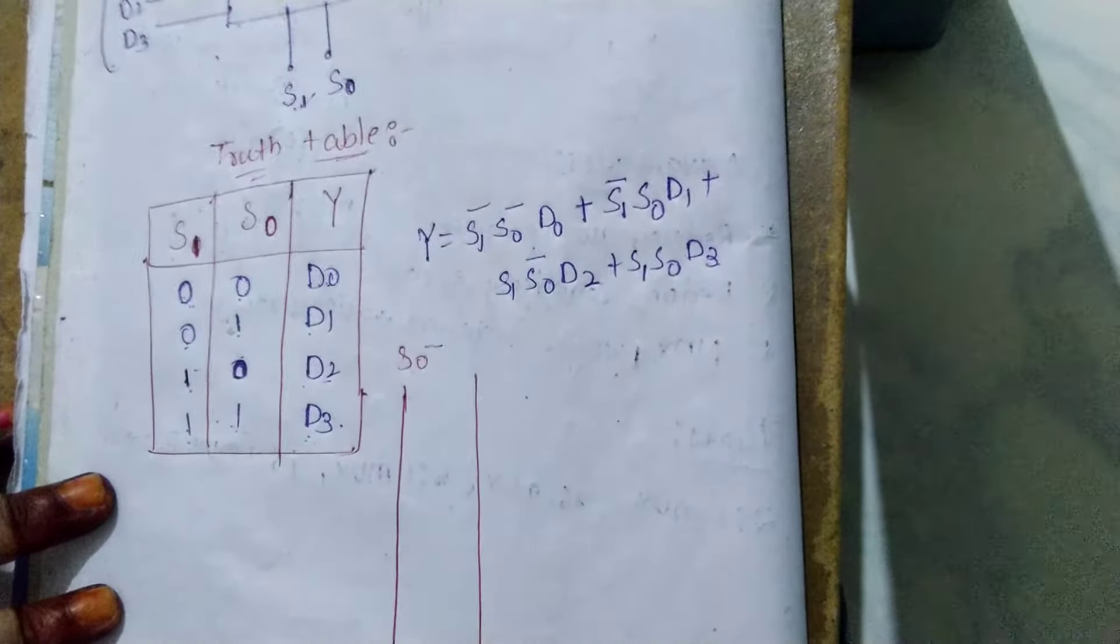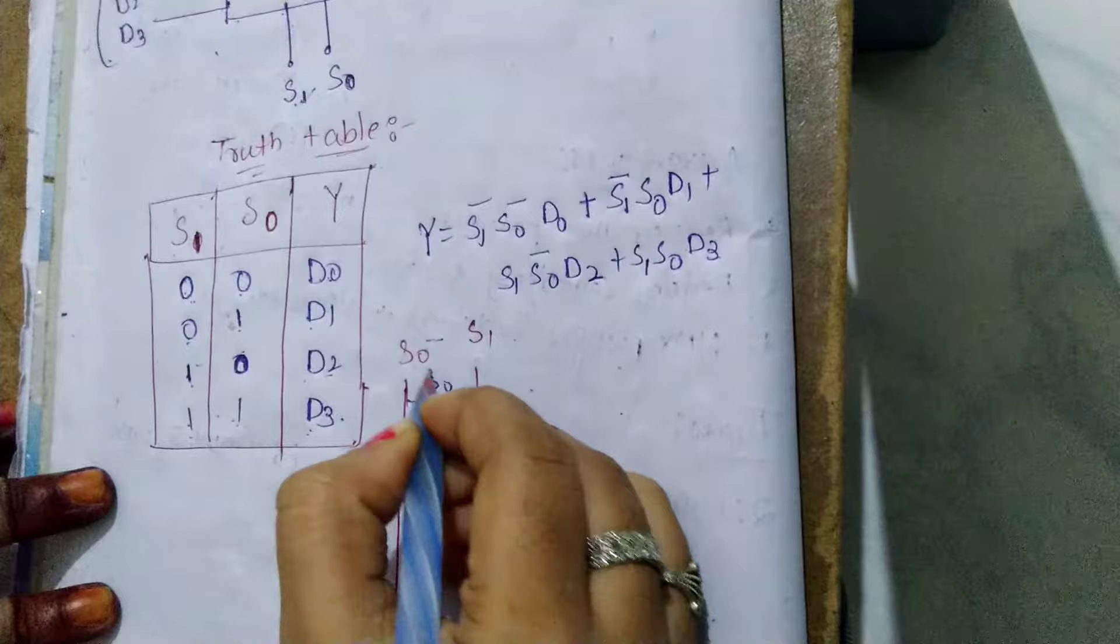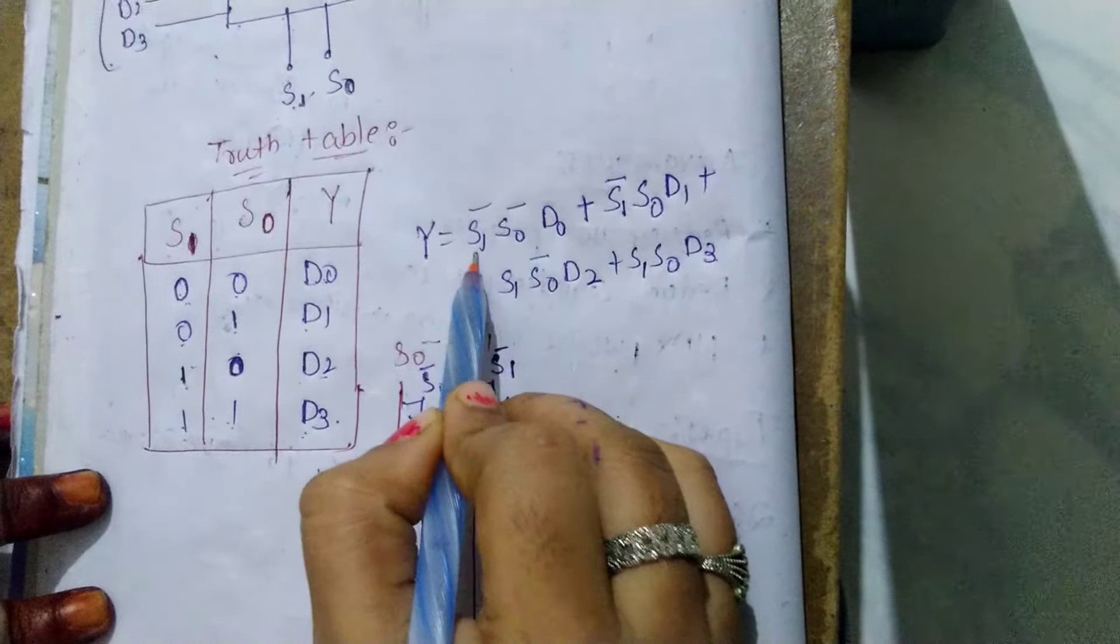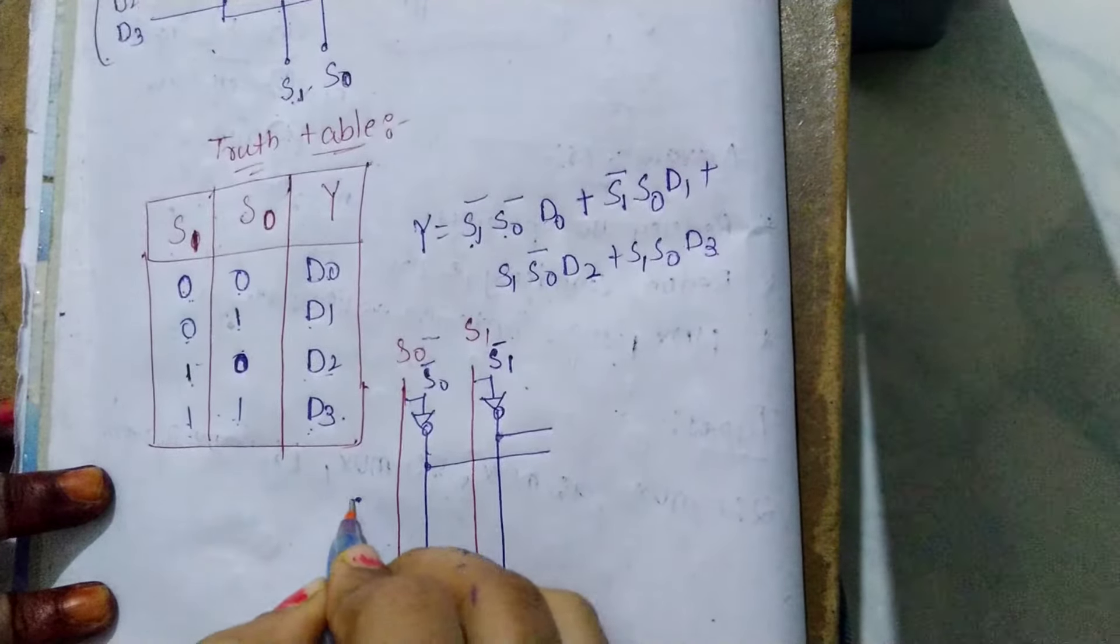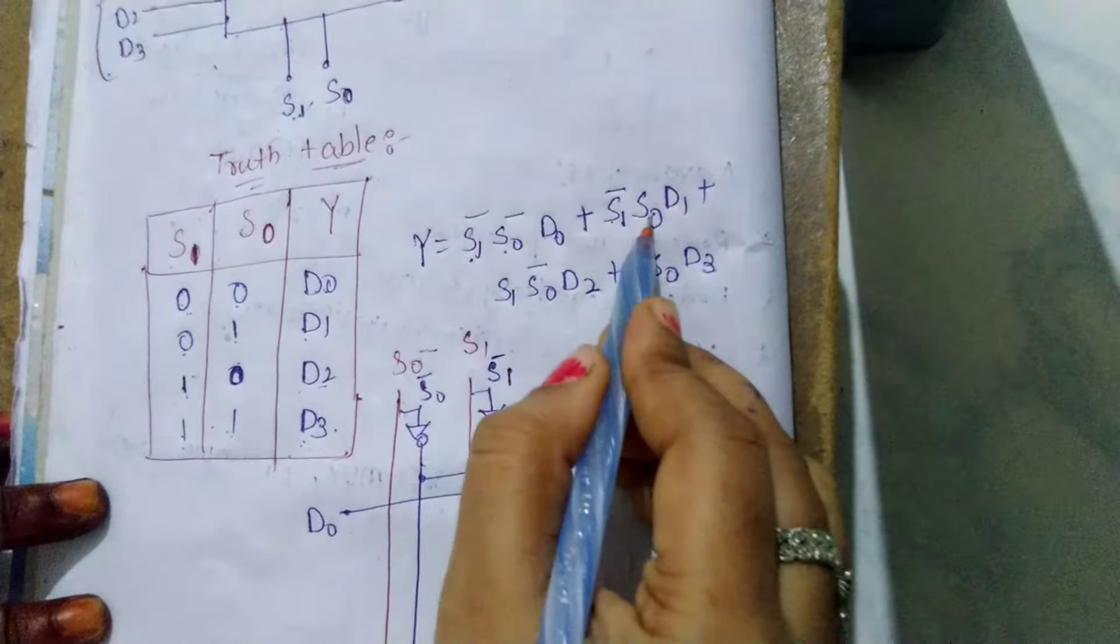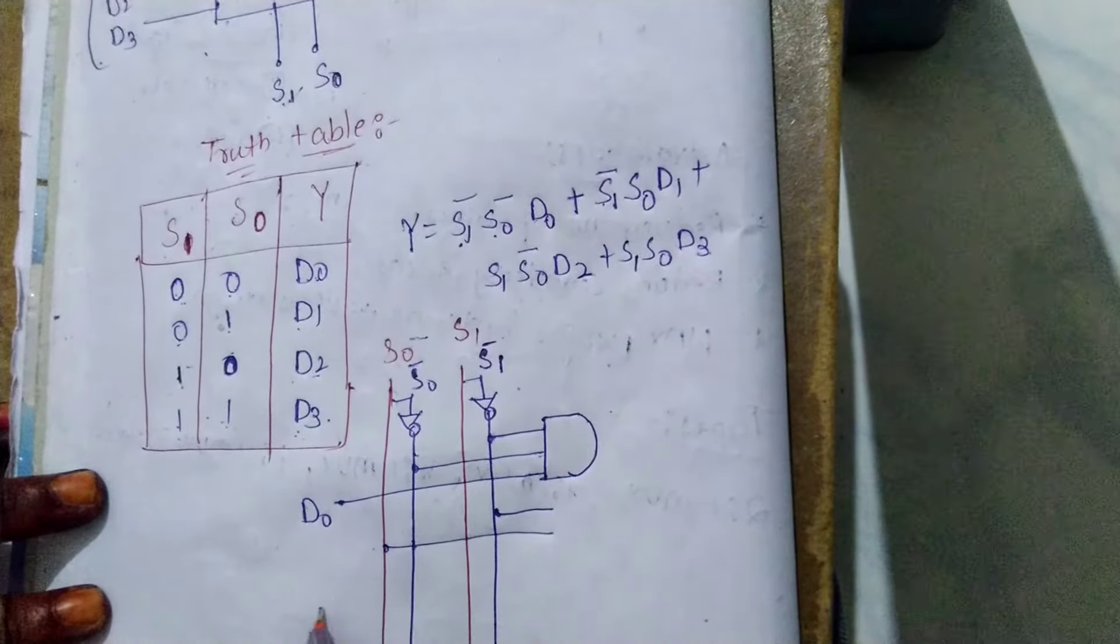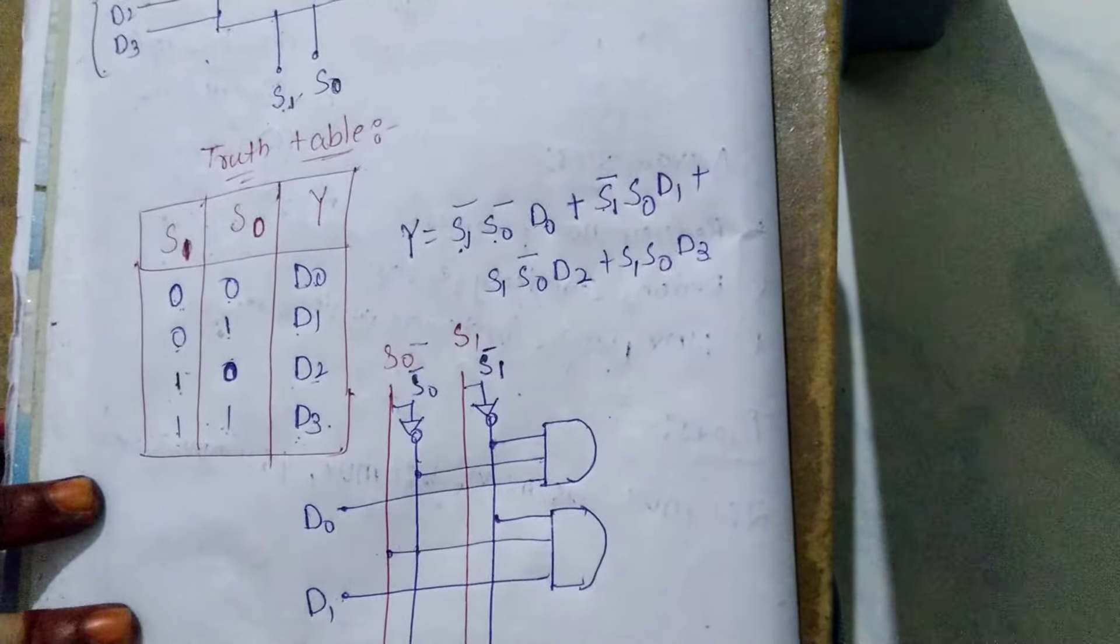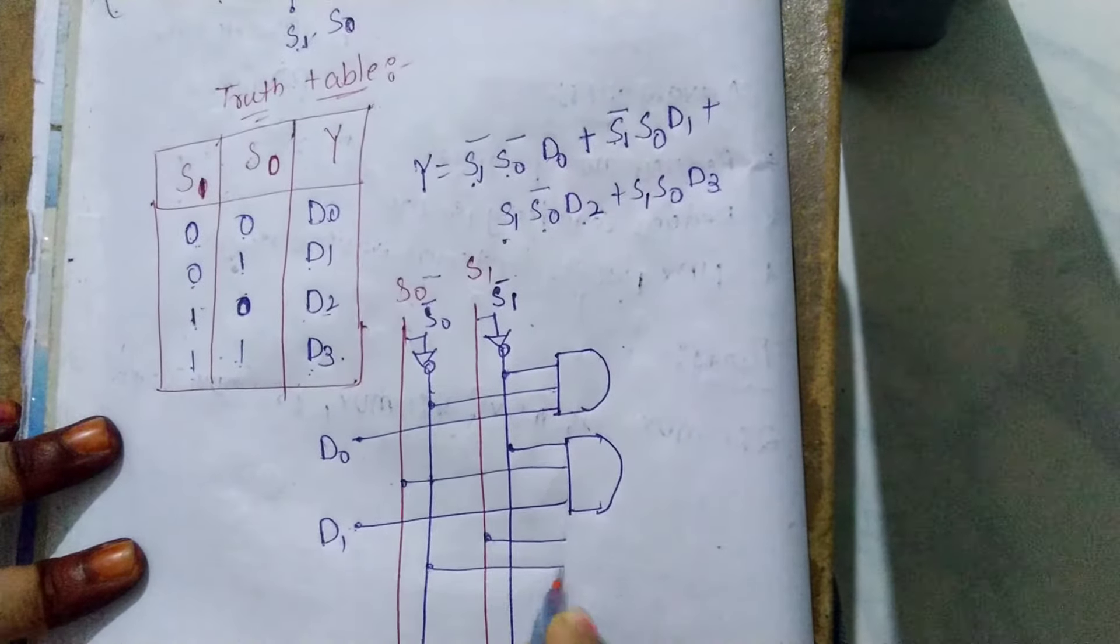First term is S1 complement S0 complement D0 - we AND S1 complement, S0 complement, and D0. Next, S1 complement S0 D1 - we AND S1 complement, S0, and D1. Next, S1 S0 complement D2 - we AND these together.